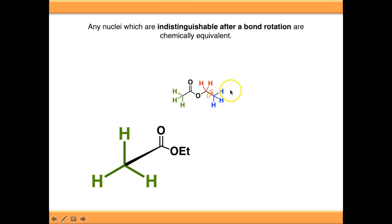We can do the same thing with the blue protons by rotating around this carbon-carbon bond. Again, try and keep track of one of these, and if you rotate around that bond, you'll find that if you black this out and come back to it, you wouldn't be able to tell which of the protons was which. Therefore they're indistinguishable after a bond rotation and are chemically equivalent.